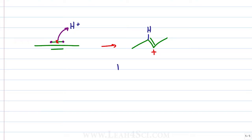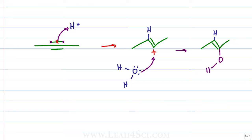In the next step, water, which is acting as our Lewis base, is going to reach out for and attack the carbocation, giving us an intermediate that now has an oxygen with 3 bonds — 2 to hydrogen, 1 to carbon — and only 1 lone pair remains with a formal charge of plus 1.